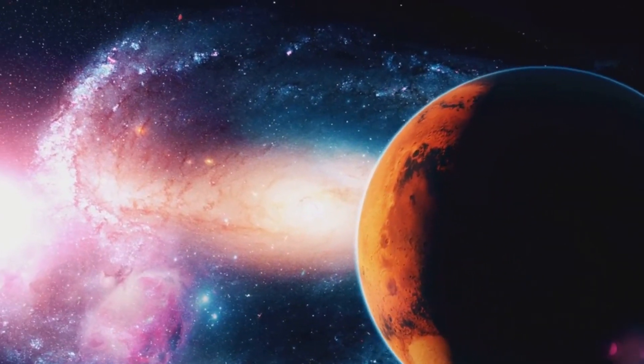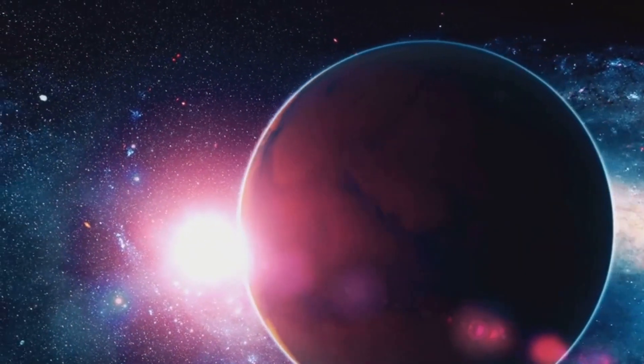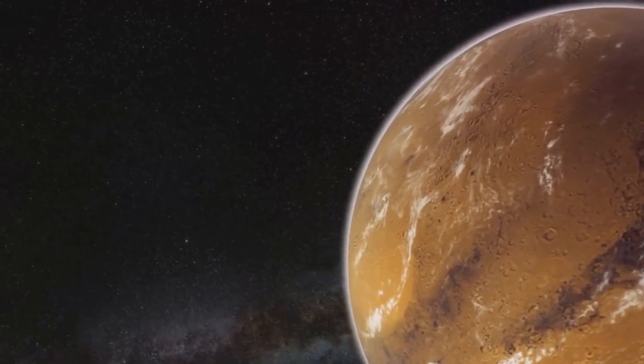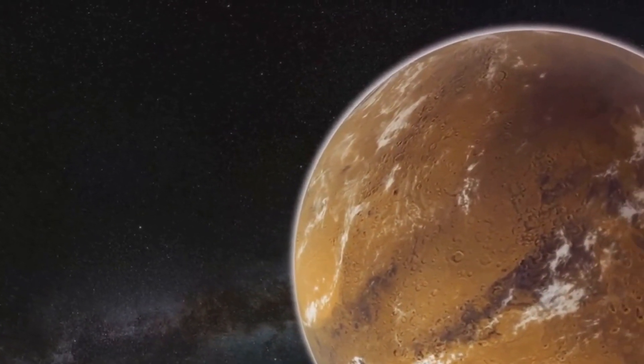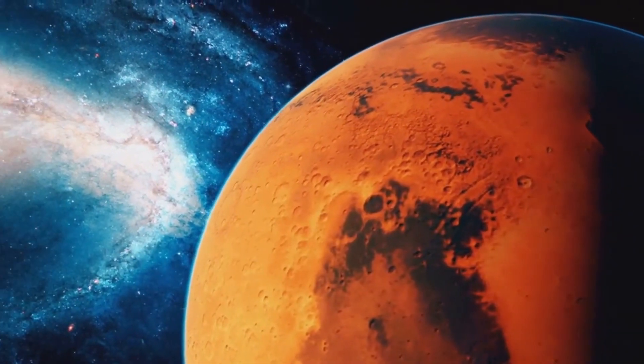Without a thick atmosphere to trap heat, Mars became cold and desolate, unable to support liquid water on its surface. The disparity in size between Earth and Mars, along with their respective cooling rates, offers insights into why Mars became inhospitable while Earth remained habitable.